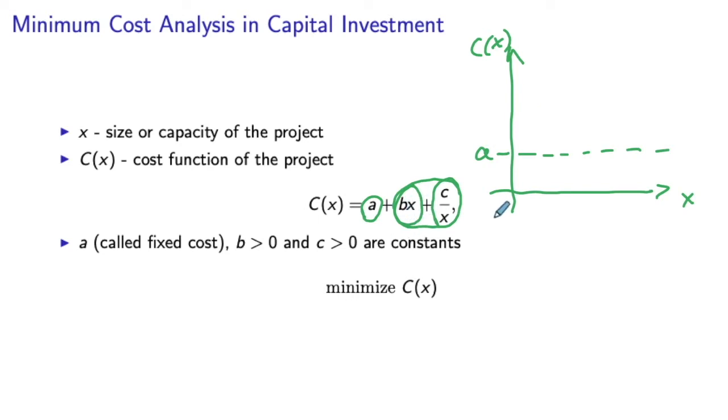Then you have the linear production cost. It may look like this. And then the third part of the cost would be the part that decreases with the size of the project. So it could be something like this.